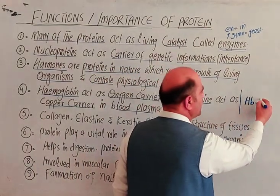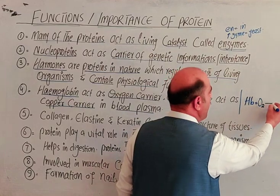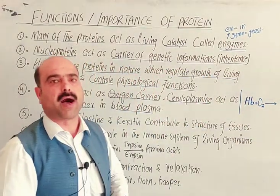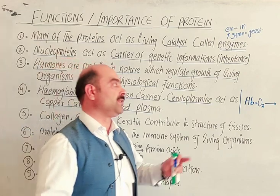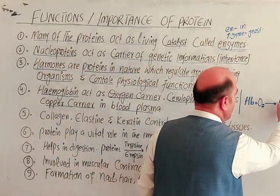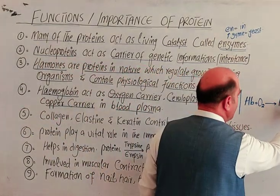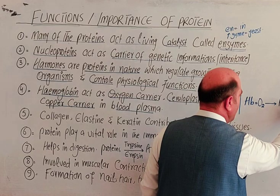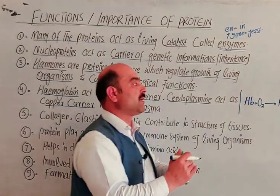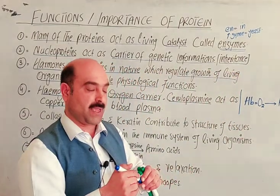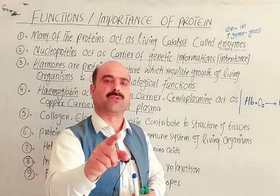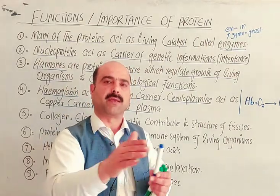Hemoglobin has oxygen binding sites on its iron. Oxygen attaches to the iron, forming a loose compound called oxyhemoglobin (HbO₂). This oxyhemoglobin carries oxygen through the bloodstream to every cell of the body.